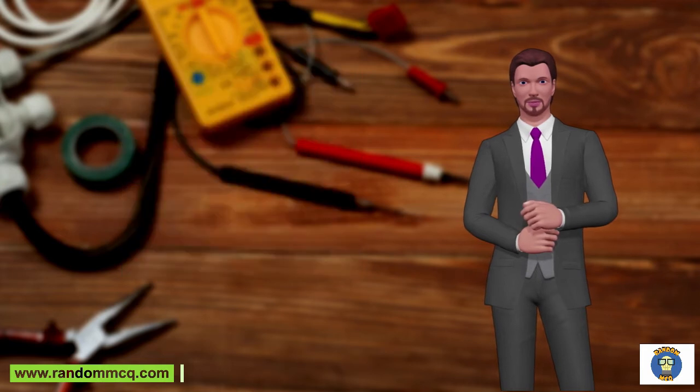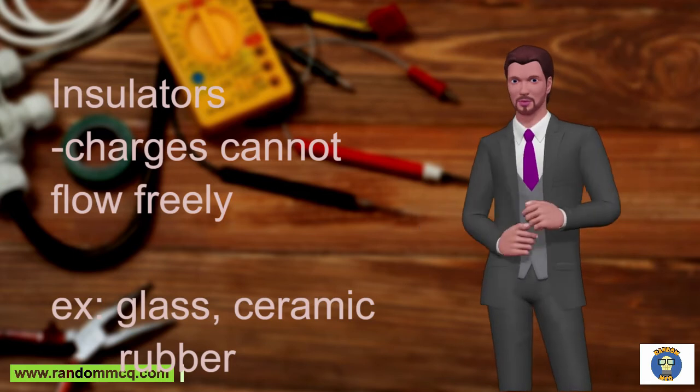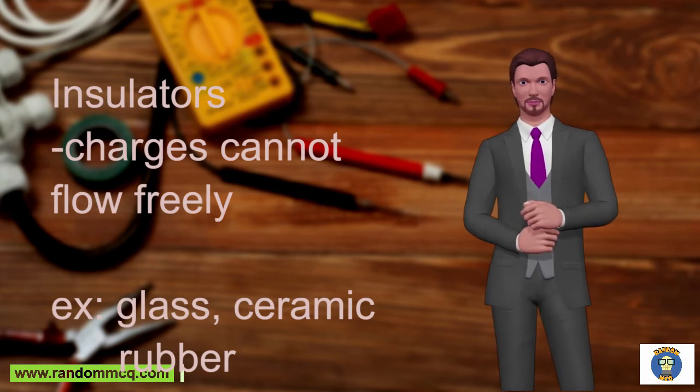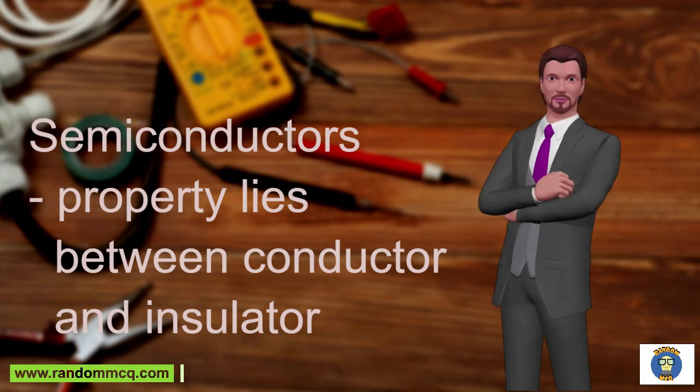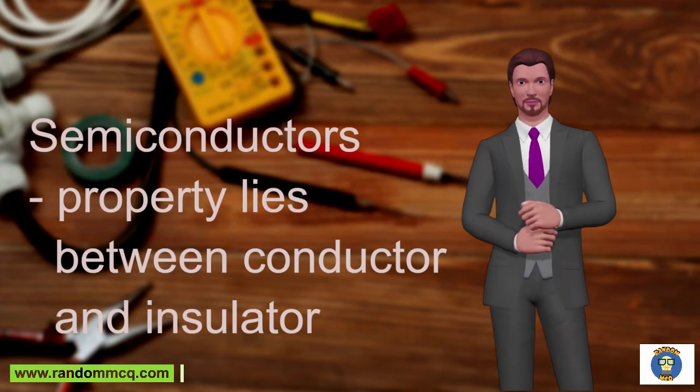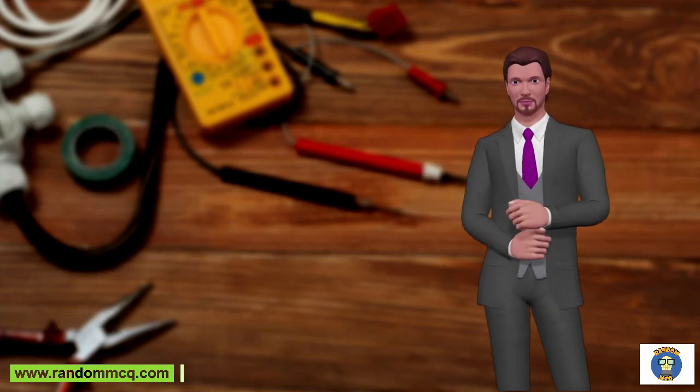Insulators are materials that do not allow charge to move easily. Examples include glass, plastic, ceramics, and rubber. Semiconductors are materials whose properties lie between conductors and insulators, and have a moderate resistance to the flow of charge. Examples include silicon, germanium, and gallium arsenide.